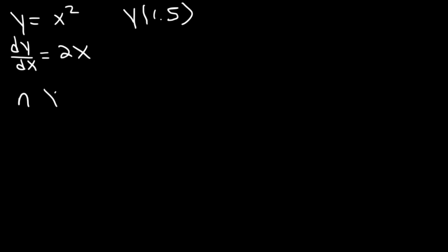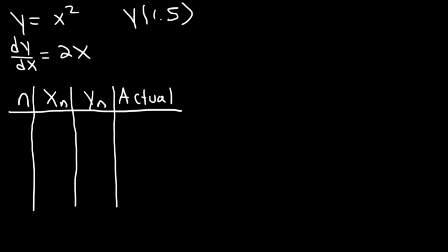So now let's make a table. It's going to have n, x sub n, y sub n, and also the actual value. Here's the formula for Euler's method: y sub n+1 is equal to y sub n plus h, which is the step size, times f prime of x sub n. In this problem, the differential equation is in terms of x, so I'll just write it as f prime of x.